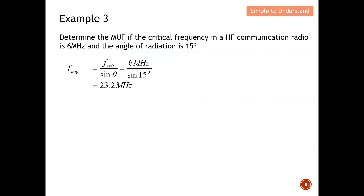Example three: determine the maximum usable frequency (MUF) if the critical frequency in an HF communication radio is 6 MHz and the angle of radiation is 15 degrees. Using the MUF formula introduced in the earlier HF communication discussion, with a critical frequency of 6 MHz and a launch angle of 15 degrees, the maximum usable frequency computes to 23.2 MHz. Note that we don't typically operate at the MUF itself — we use a frequency between the LUF and the MUF.